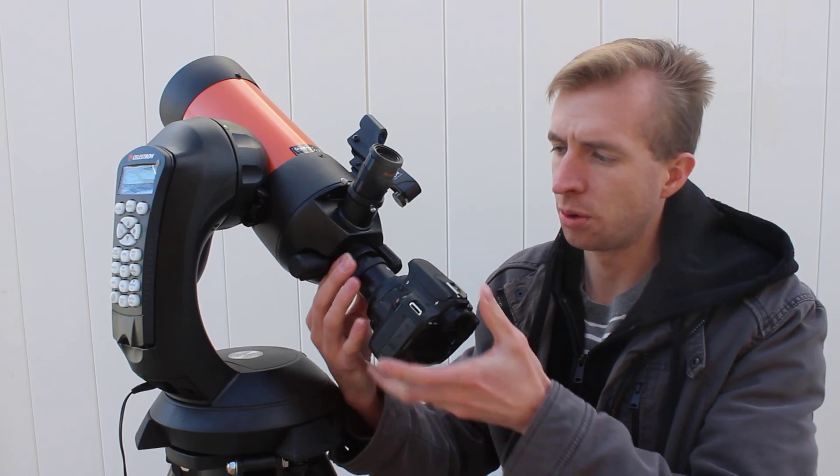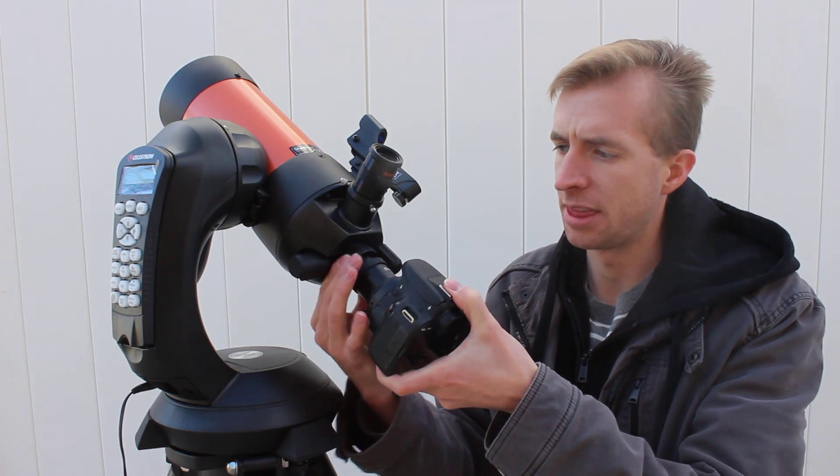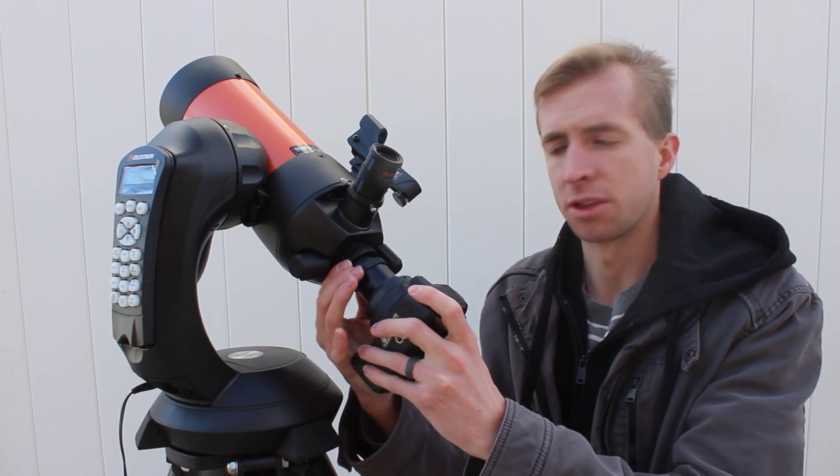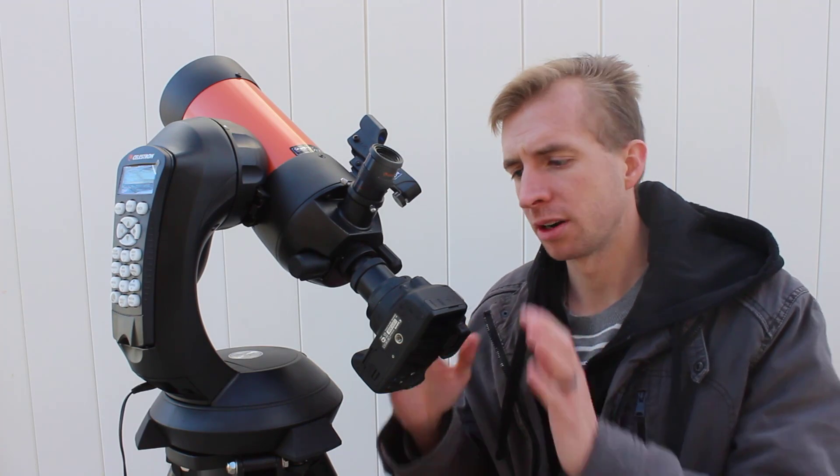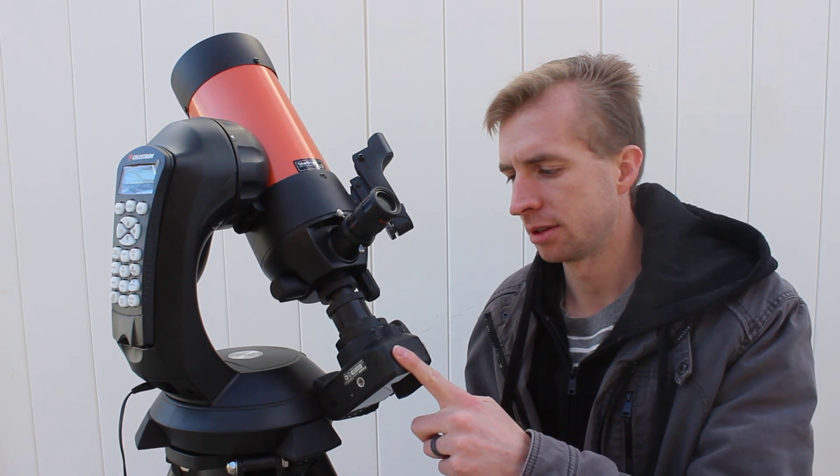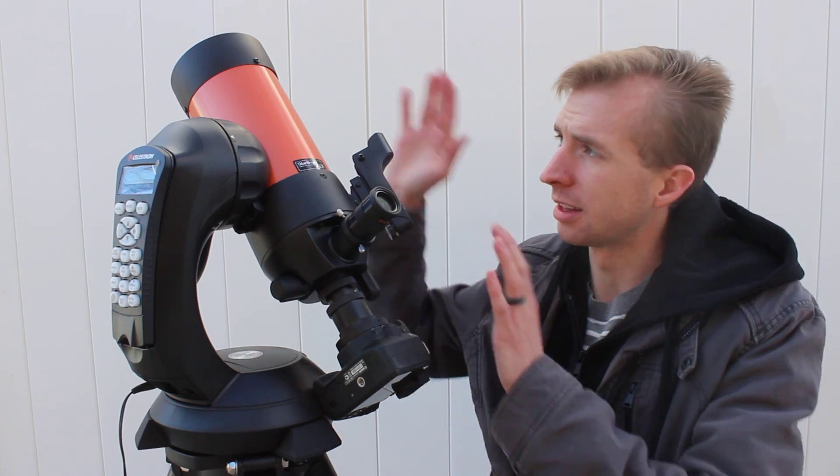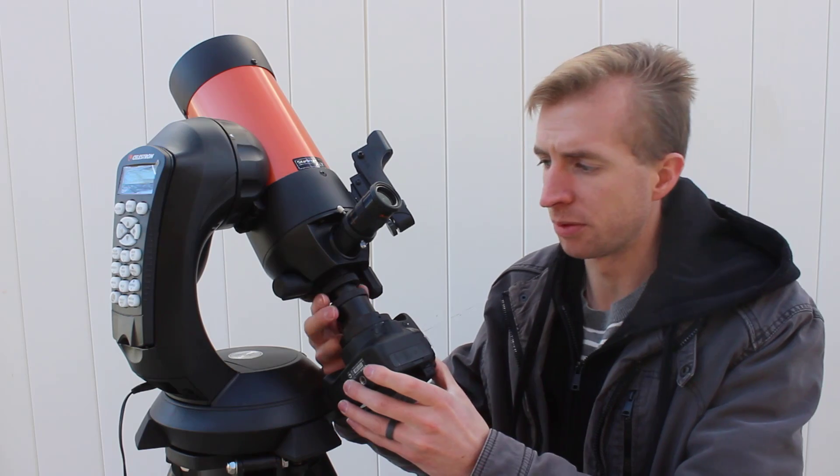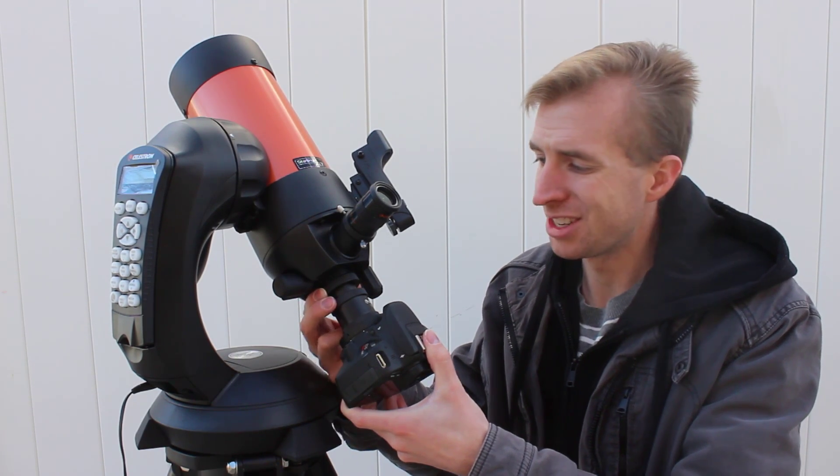And you can tighten that down, and the cool part is if you want to change the orientation of your DSLR, you just unthread that a little bit, and you can change the orientation and re-thread it down. Now one thing just to be aware of when you are using a DSLR is you don't want your camera to run into the mount. So just be careful that if you're taking an image of something that's pretty high in the sky, that you make sure you're not going to run into your mount before you slew over to it. And that's pretty much it.